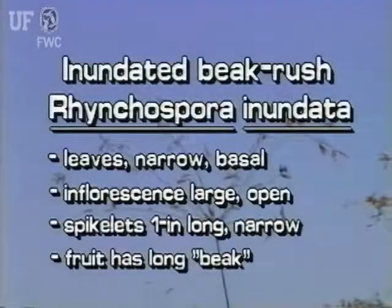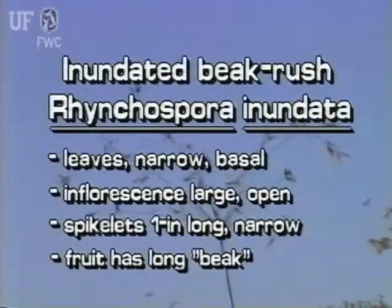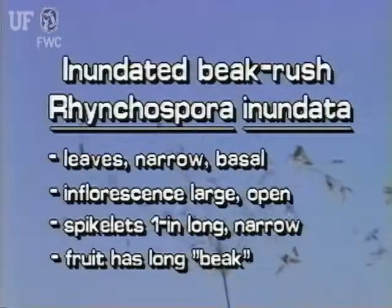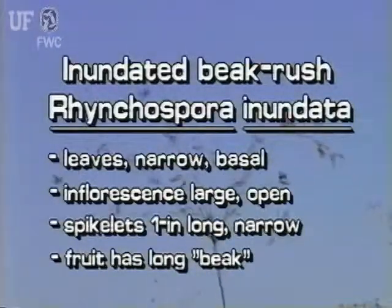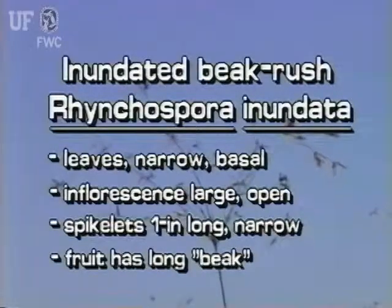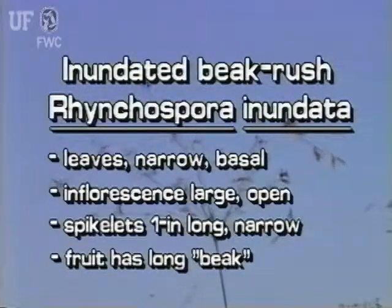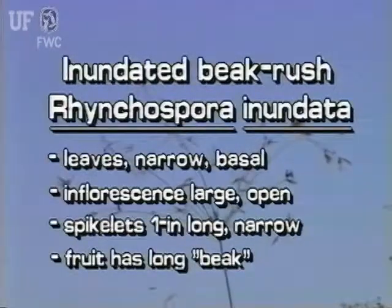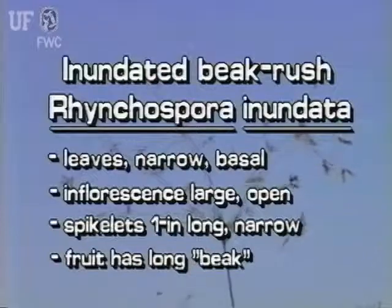Inundated beak rush has narrow leaves that arise from the base of the plant. Its inflorescence is relatively large and very open. The narrow pointed spikelets are about an inch long. The fruit has a long pointed beak and long bristles.